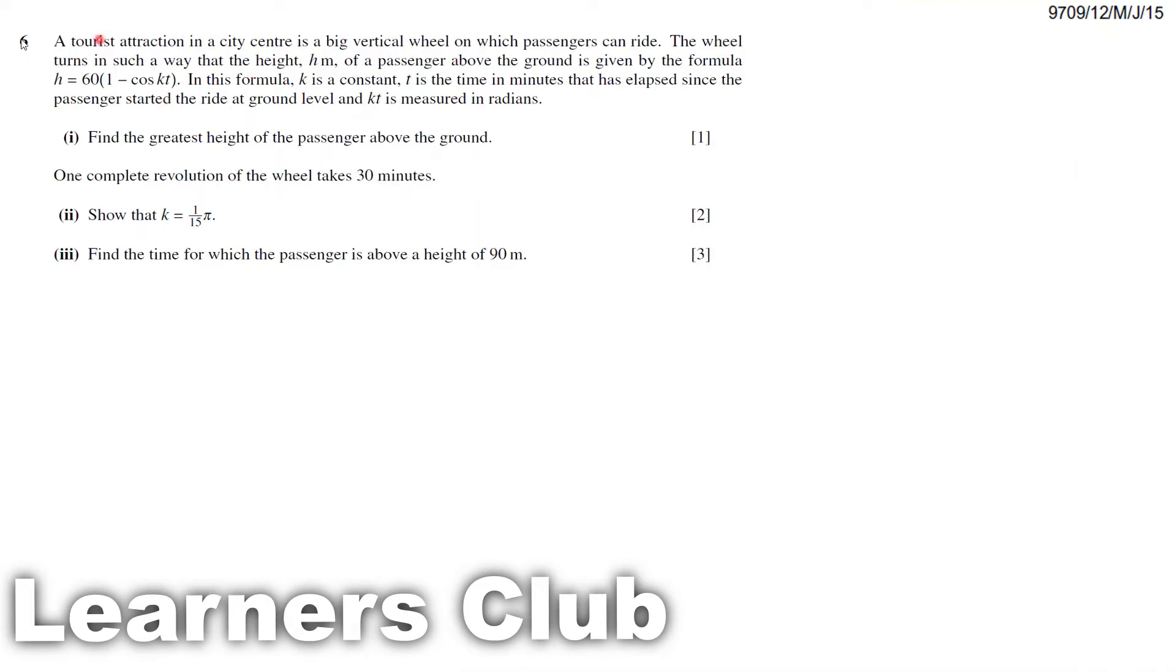This is the expression. In this formula k is a constant, t is time given in minutes that has elapsed since the passengers started the ride at ground level, and kt is measured in radians.